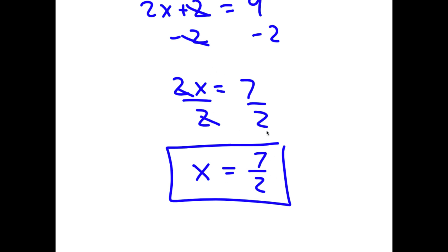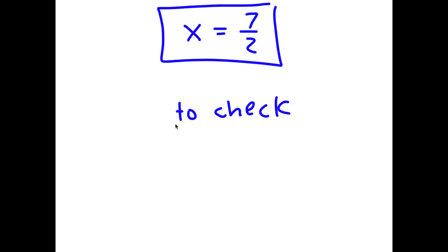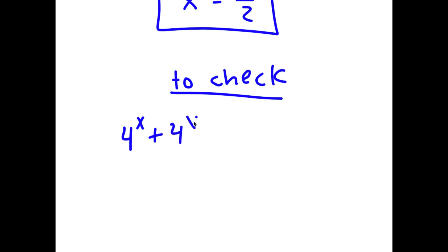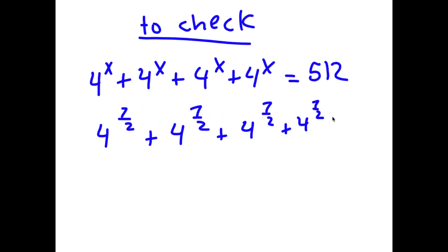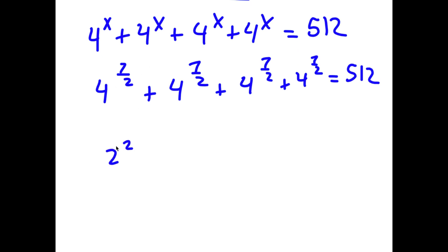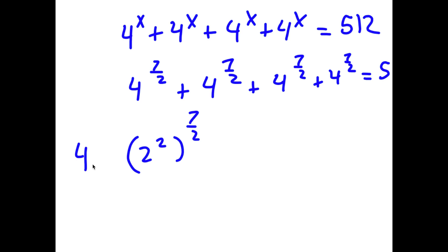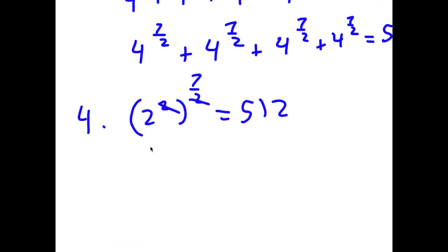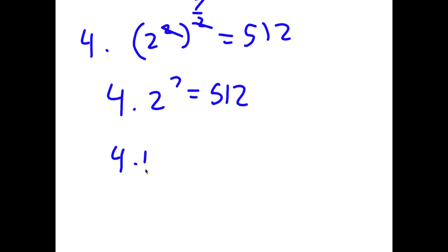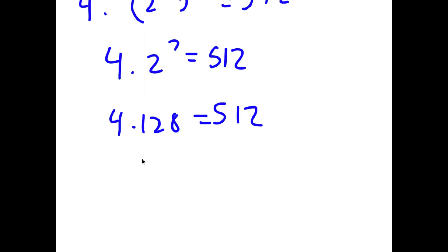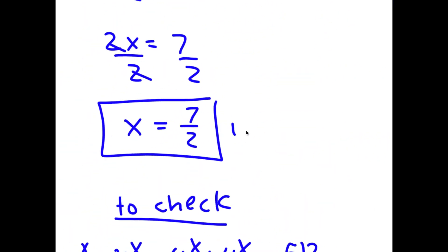Now I'm going to check if this is right. My original equation was 4 to the power of x plus 4 to the power of x plus 4 to the power of x plus 4 to the power of x is equal to 512. Plugging in 7 over 2, I get 4 times 4 to the power of 7 over 2 equal to 512. Now 4 is the same as 2 squared, so 2 squared to the power of 7 over 2, the 2s cancel out, giving 4 times 2 to the power of 7 is equal to 512. And 2 to the power of 7 is 128, so 4 times 128 is 512. So 512 equals 512 — the solution is confirmed.